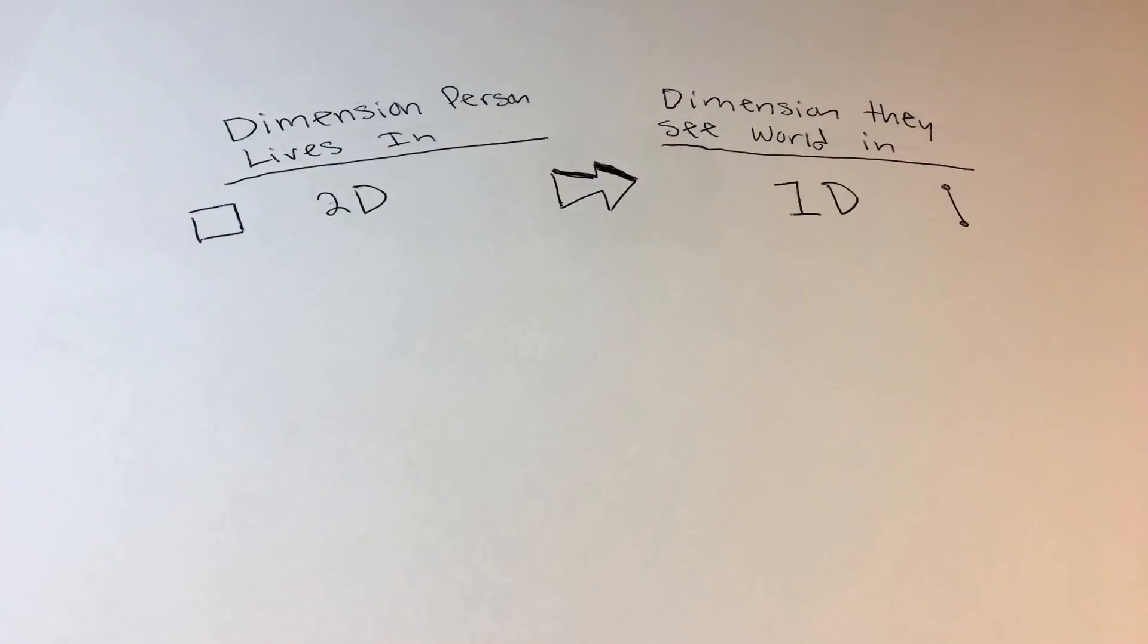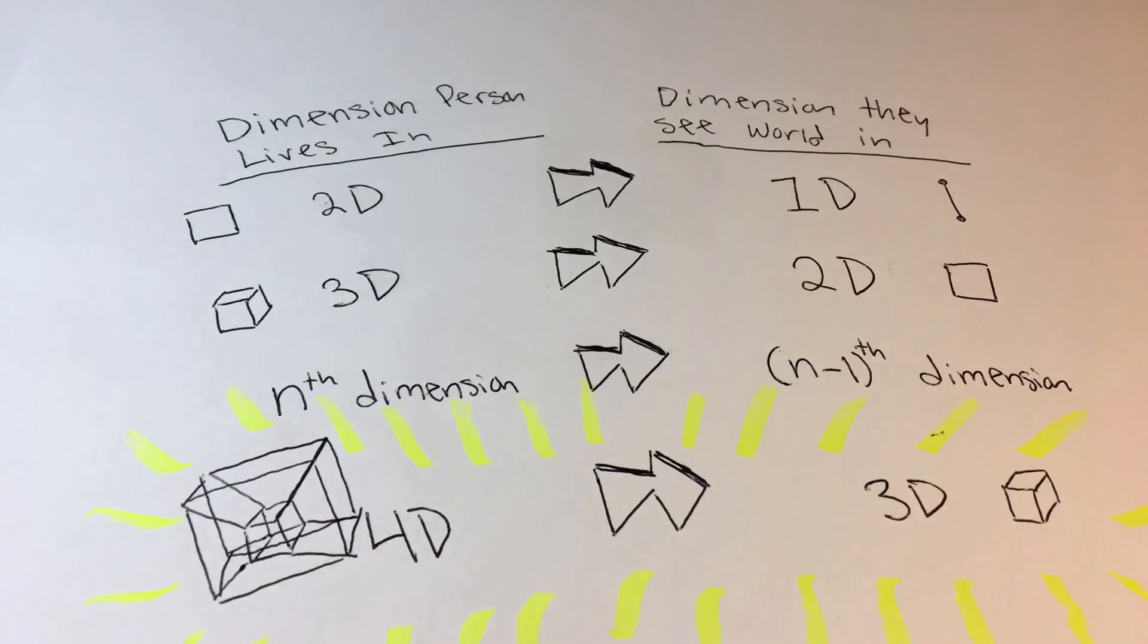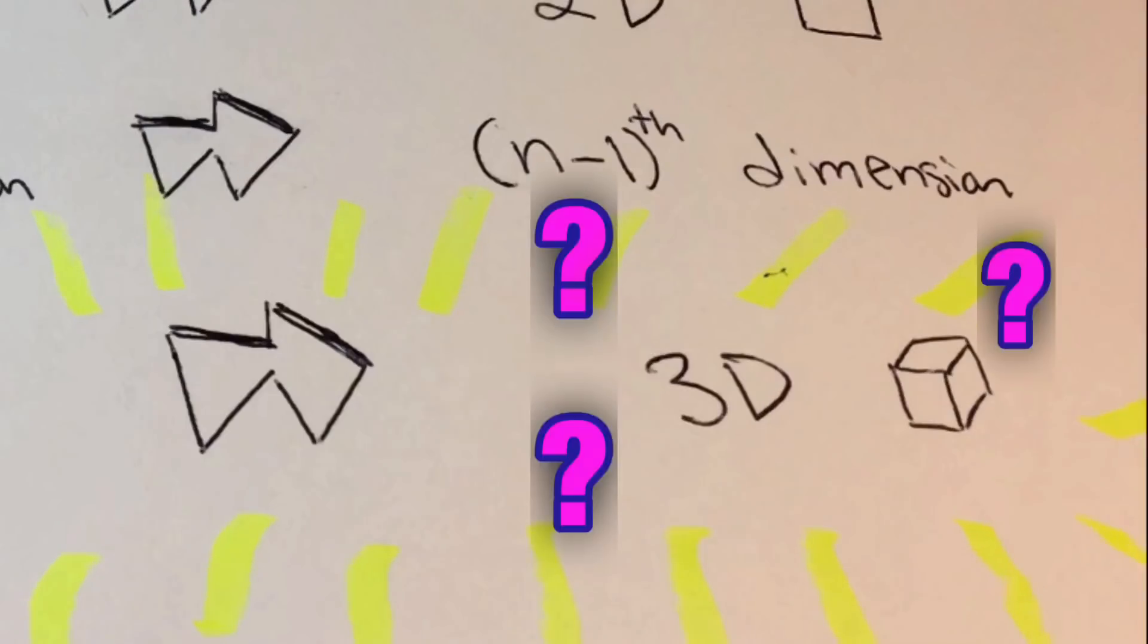So a 2D world is seen in one dimension, and a 3D world is seen in two dimensions. So that means a 4D world must be seen in three dimensions. But what does it mean to see in three dimensions?